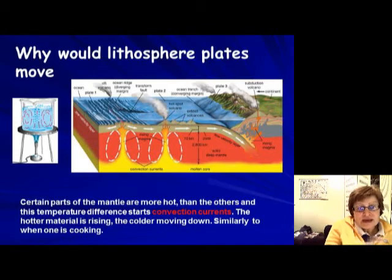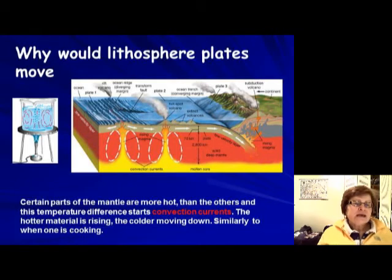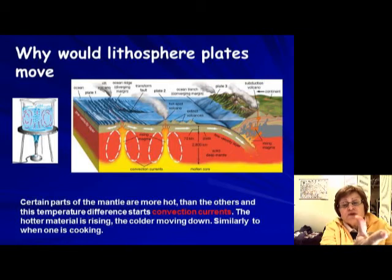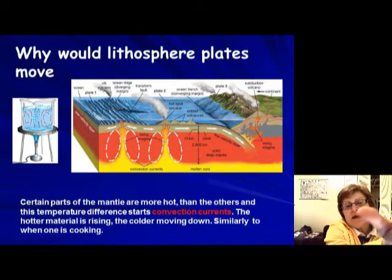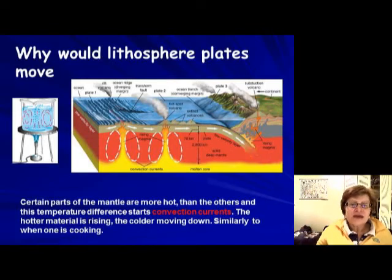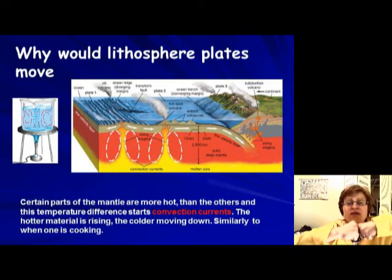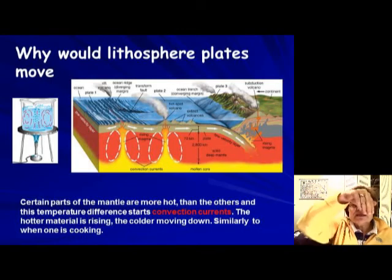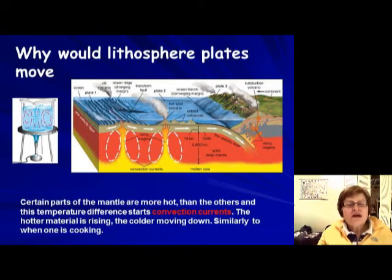The same thing happens in the mantle. Where there are more radioactive elements, more heat energy is produced, and the material starts to move upward. When it reaches the Earth's crust it breaks it up, and magma comes up to make volcanoes. Because the magma needs room, it pushes things away from each other — that creates a divergent plate boundary where plates move apart. On the other side, plates moving toward each other form convergent boundaries, where the cooler, denser material goes down.